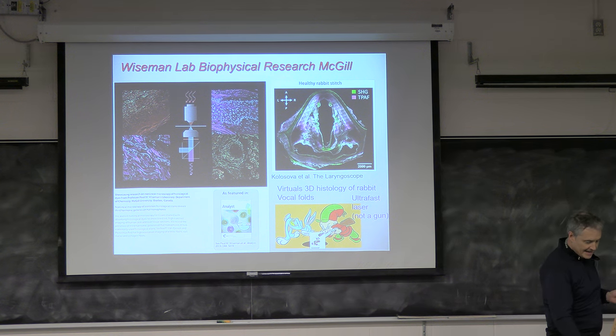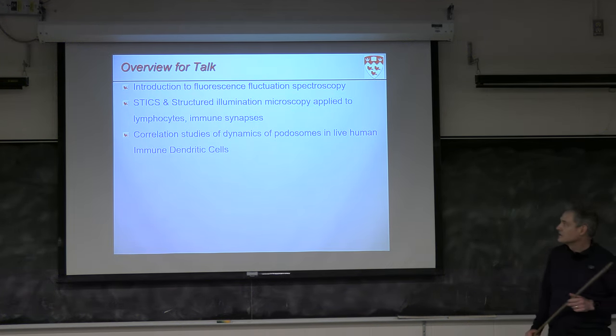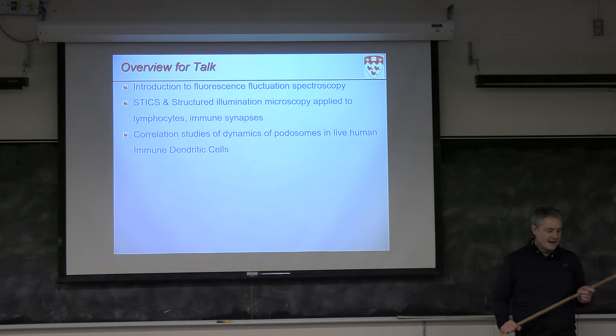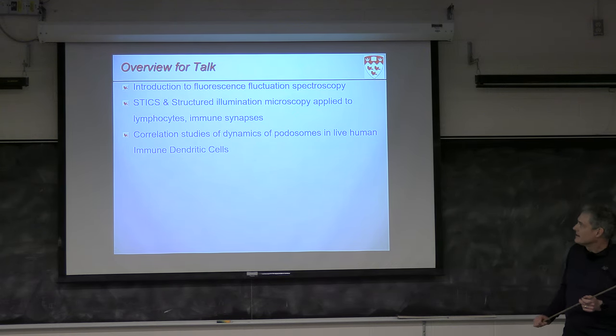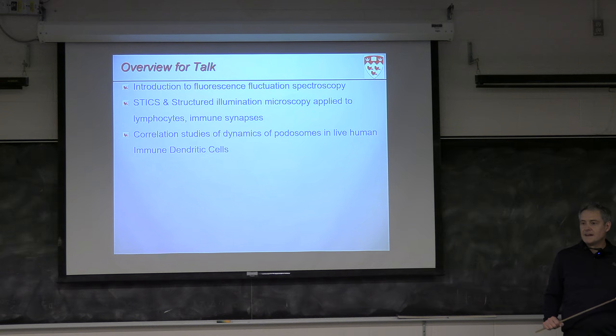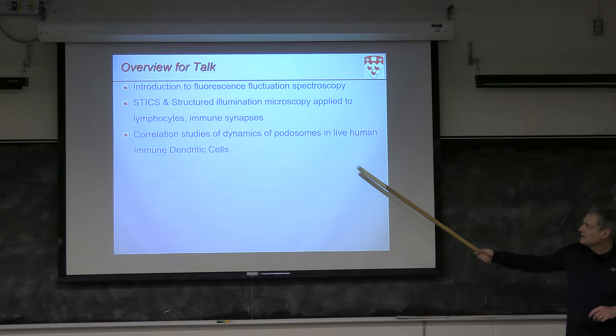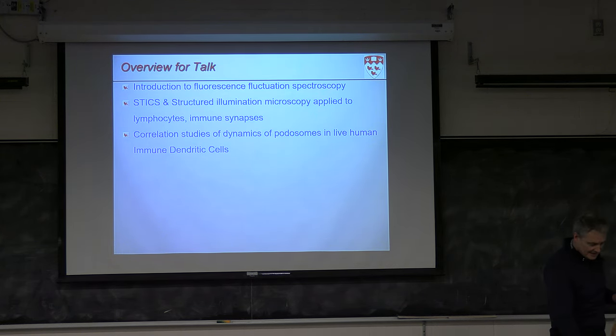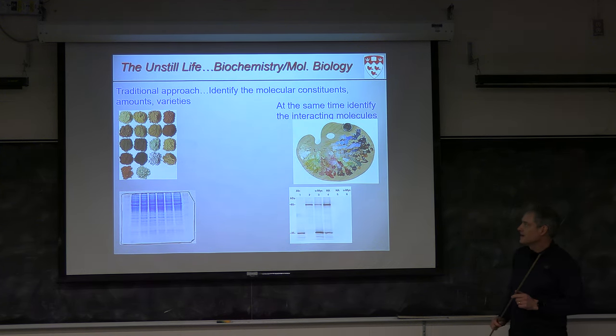So I'm going to introduce fluorescence fluctuation spectroscopy with a bit of background and then explain the techniques from which it was developed and then go on to explain the one which I'd say is the easiest to understand, STICS, the space-time image correlation spectroscopy and show an application in terms of looking at immune cells. And STICS is easiest to understand because it involves audience participation. You don't have to move, but you will participate in the explanation of the technique.